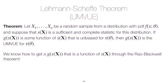That's this theorem here due to Lehmann and Scheffé. Suppose we have a random sample from a distribution with PDF f, and suppose that S(X) is sufficient and complete for the distribution. If we take some function of this sufficient and complete statistic — say G(S(X)) — then G(S(X)) is the uniformly minimum variance unbiased estimator for tau of theta.